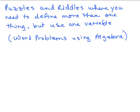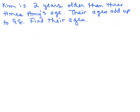All right, we're going to do some more puzzles and riddles where you need to find more than one thing, but you could still use one variable. Kim is 2 years older than 3 times Amy's age and their ages add up to 98. Find their ages.